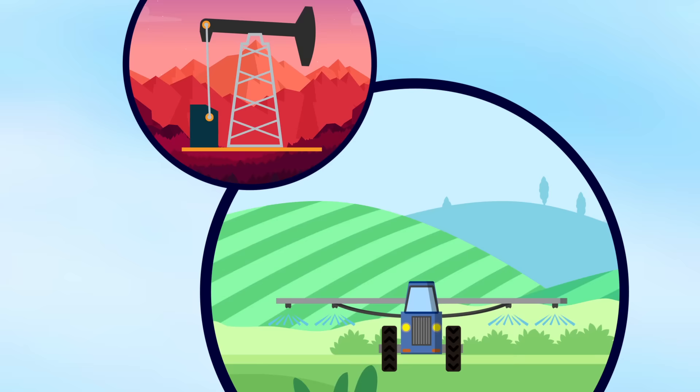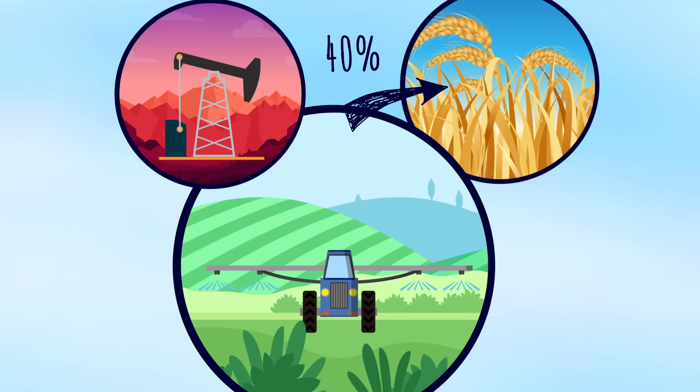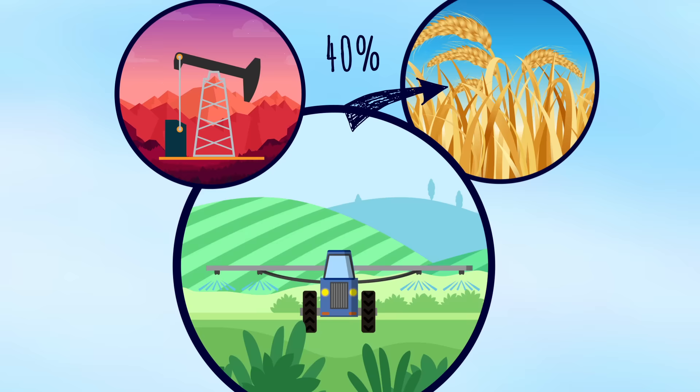The nitrogen-based fertilizers that farmers use are made using huge amounts of fossil fuels. Only around 40 percent of these inorganic fertilizers get absorbed by crops. The rest is either volatilized, polluting the atmosphere, or it runs off polluting our rivers, lakes, and oceans, causing algal blooms and dead zones that are a major environmental problem.